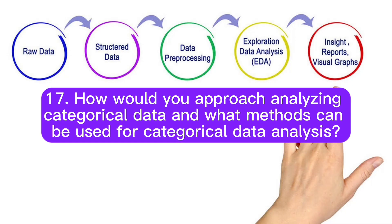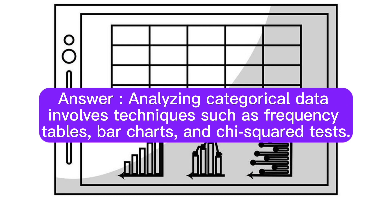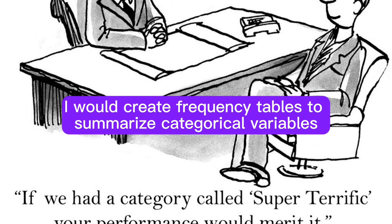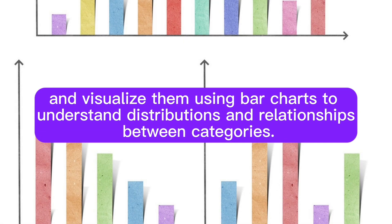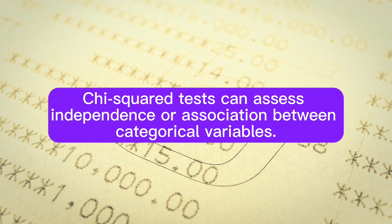Question 17: How would you approach analyzing categorical data? And what methods can be used for categorical data analysis? Answer: Analyzing categorical data involves techniques such as frequency tables, bar charts, and chi-squared tests. I would create frequency tables to summarize categorical variables and visualize them using bar charts to understand distributions and relationships between categories. Chi-squared tests can assess independence or association between categorical variables.